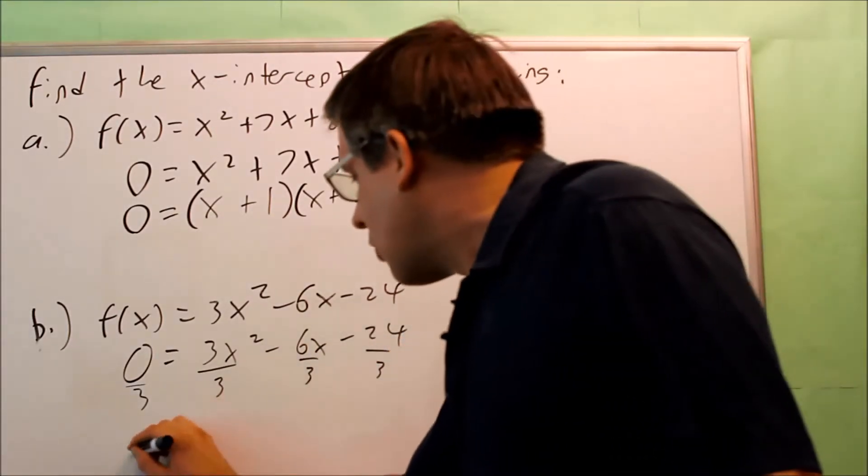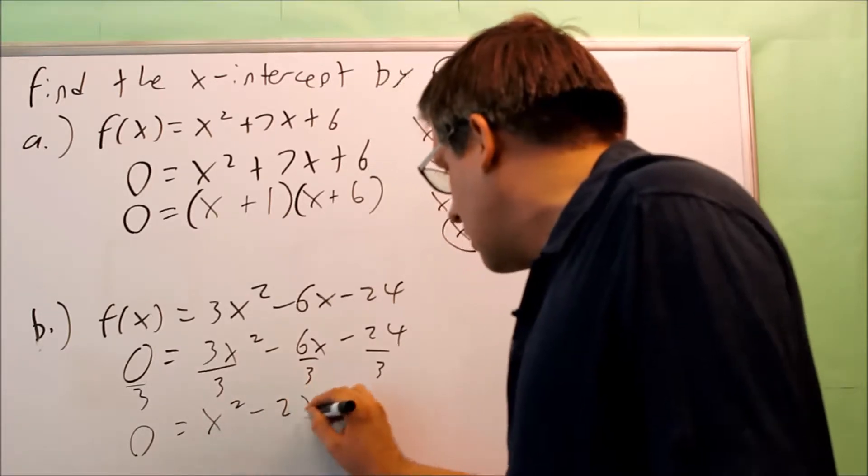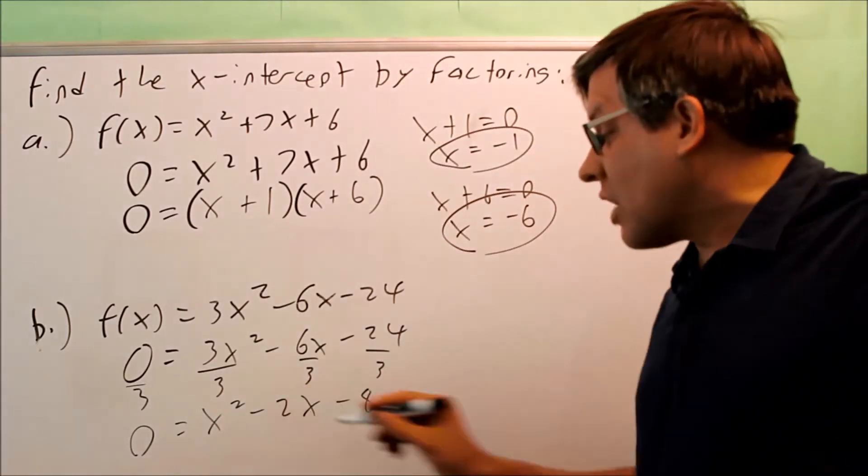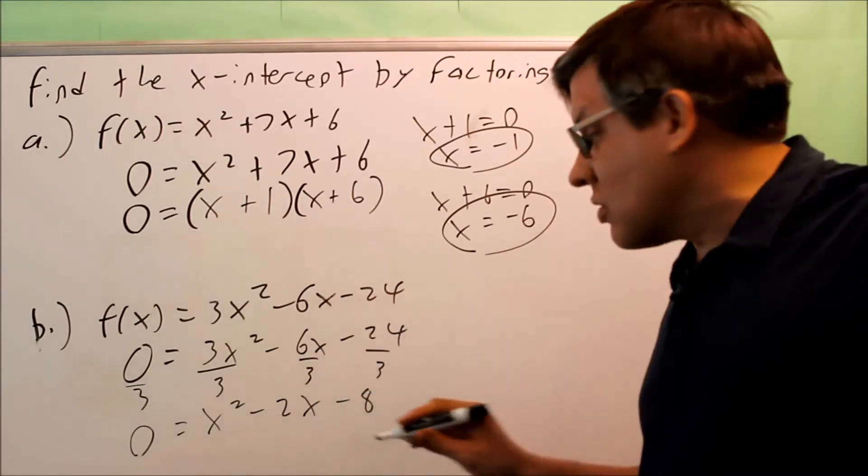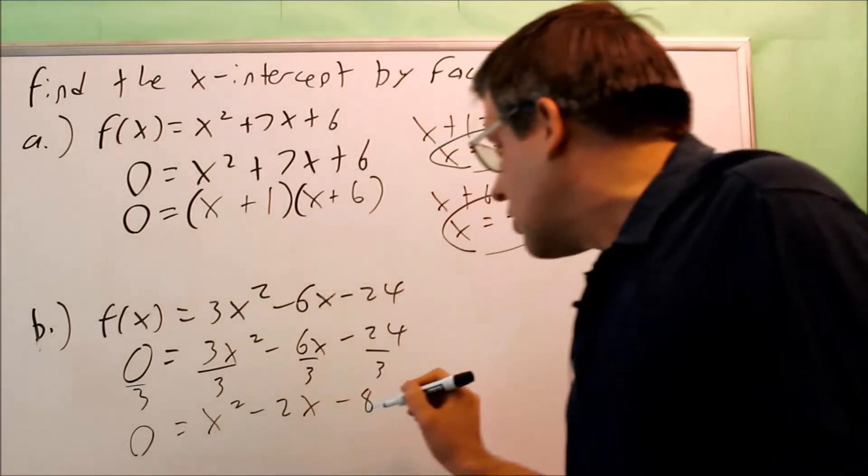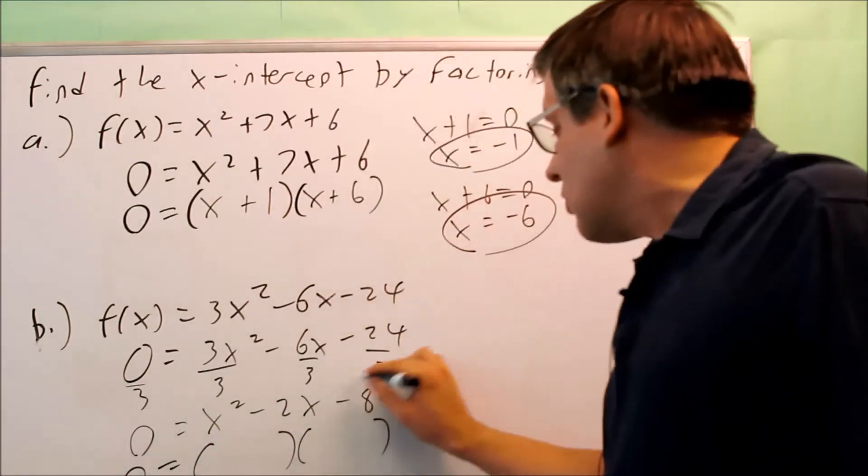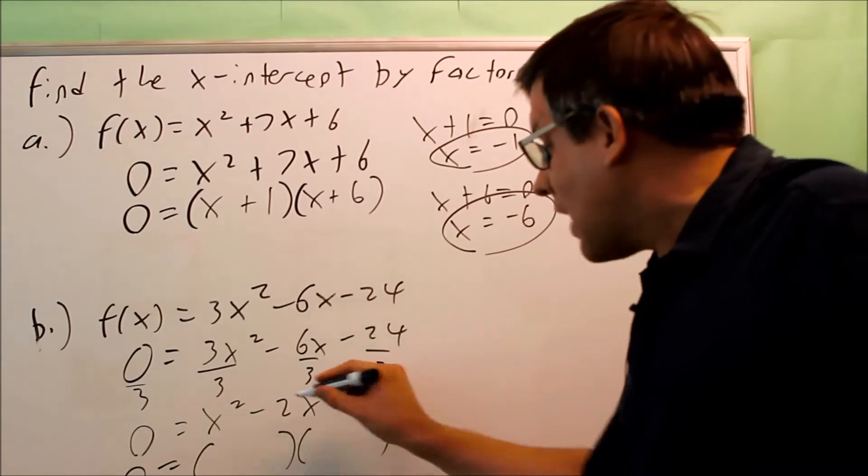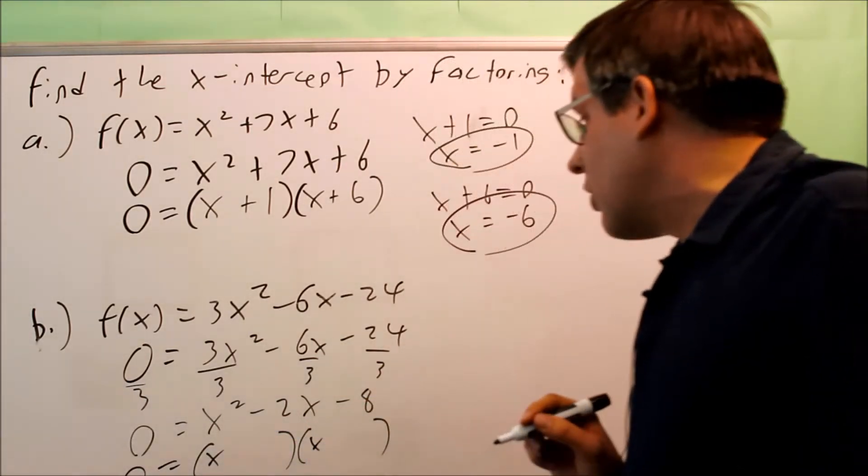This will make the number smaller. It will make it easier to factor. So by doing that, you get this. 0 equals x squared minus 2x minus 8. So here, this is another one that you want to factor. So we're going to do two things that multiply to make negative 8 and add to be negative 2. So first, this is going to be x for both of those.